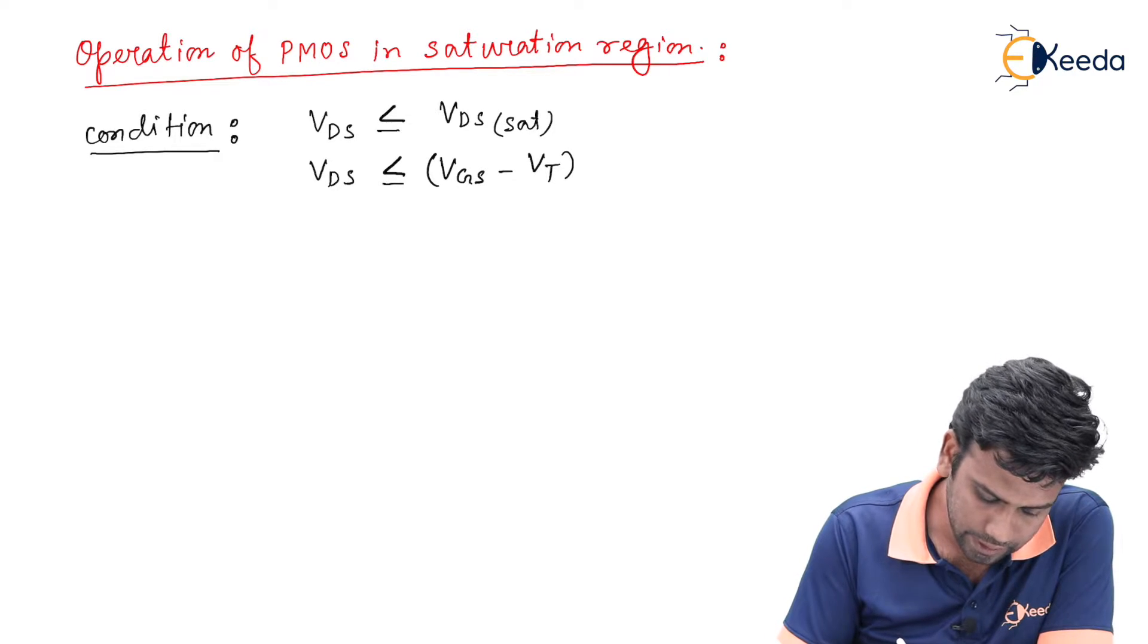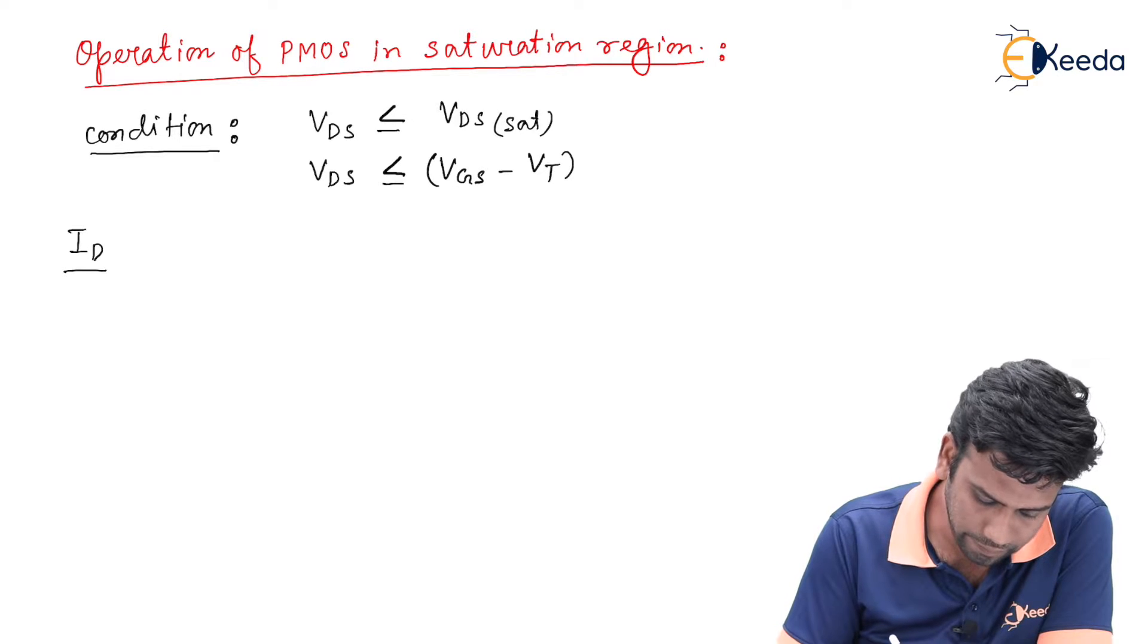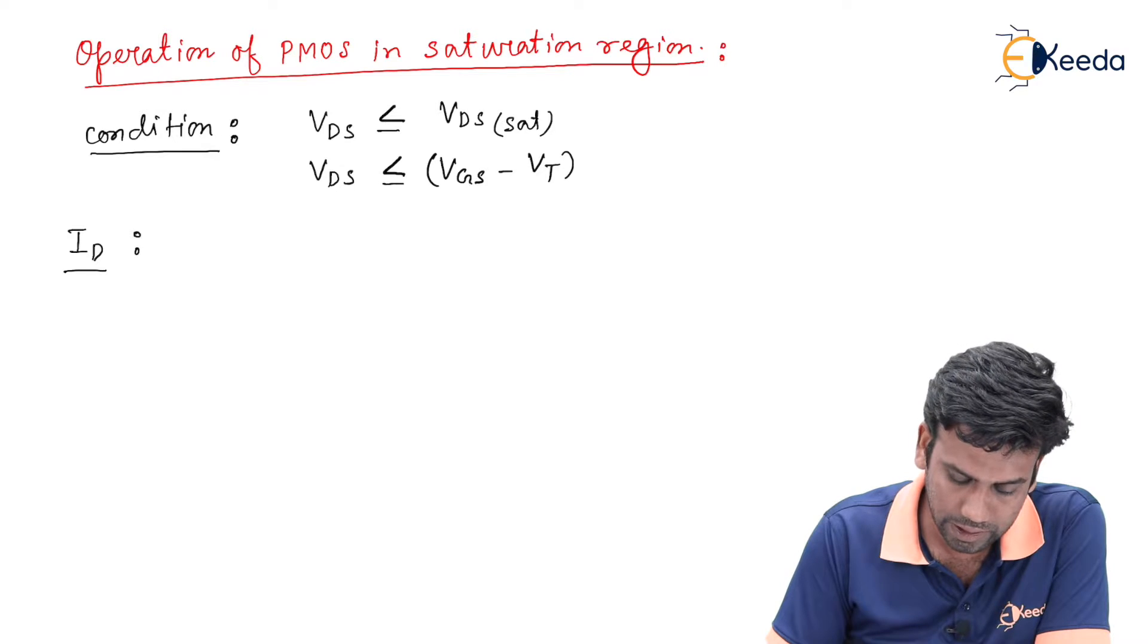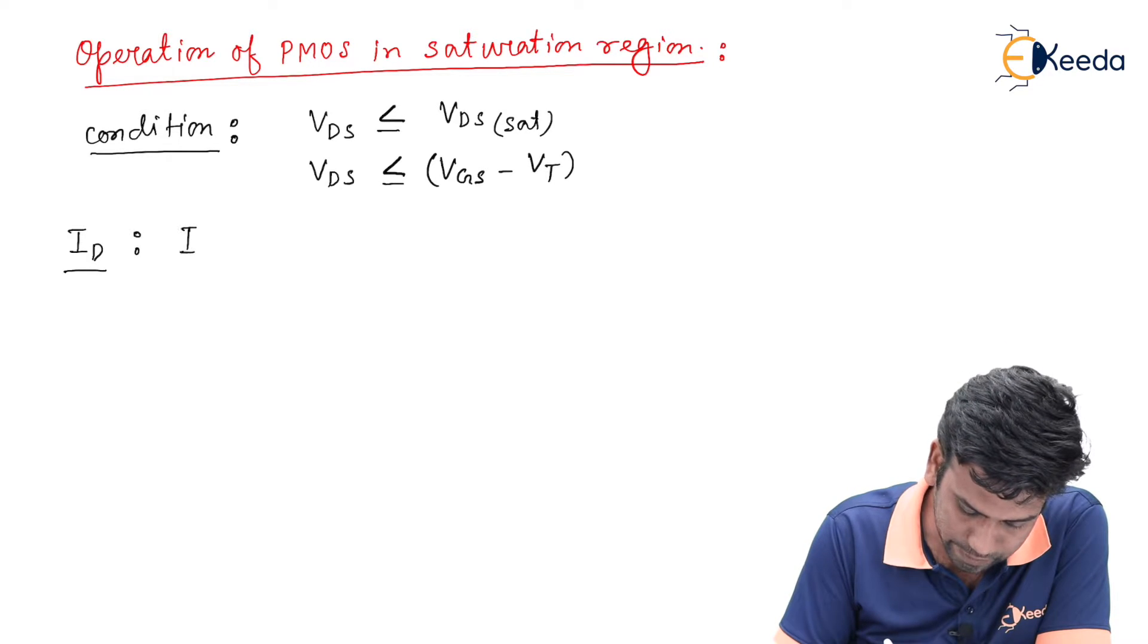Hence, the ID value of the drain current in the saturation region can be expressed by this equation: ID equals half mu_P COX W by L (VGS minus VT)² (1 plus lambda VDS).